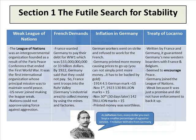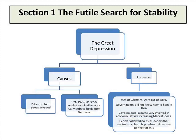Now looking at the Great Depression — you'll look at this more closely in U.S. history. The causes: prices on farm goods dropped, and in 1929 the U.S. stock market crashed because the U.S. withdrew funds from Germany. As a result, 40% of Germans were out of work. Governments did not know how to handle this, became very involved in economic affairs, increasing Marxist ideas. People followed political leaders that wanted to solve this problem, and Hitler seemed to be perfect for that.